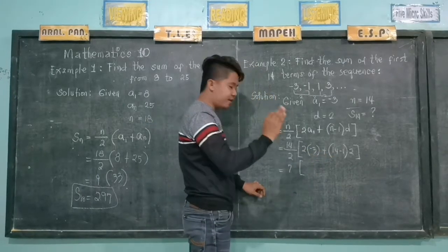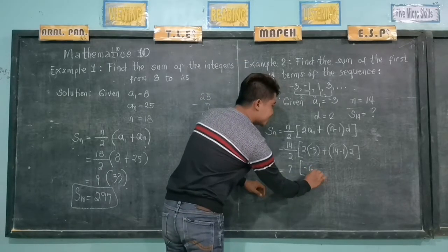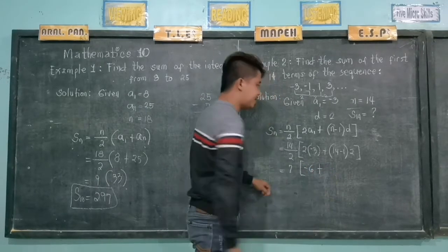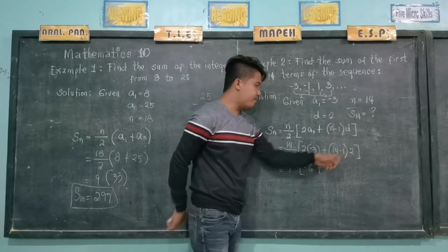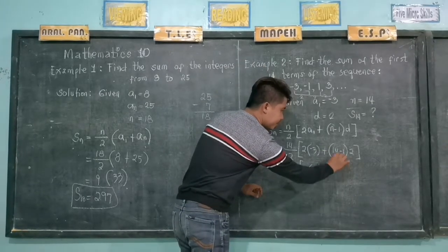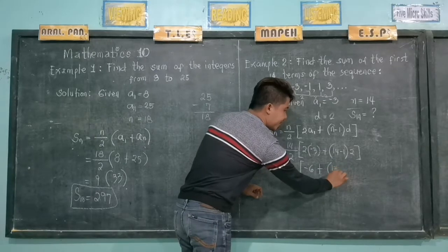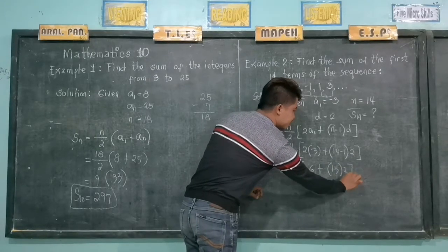2 times negative 3, we have negative 6, plus this one, 14 minus 1, 13 times 2.